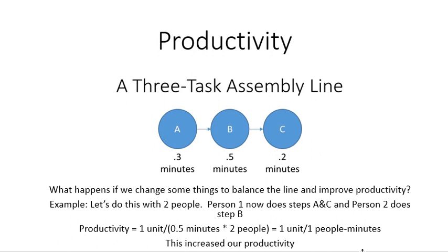If you were given a question asking what would happen to productivity if you rearrange the overall order, what you need to do is calculate the productivity for the first arrangement, then calculate the productivity for the second way, calculate it for the third way, and then compare the productivity from each method to determine which one is best as far as productivity goes. I hope this helps. Thank you.